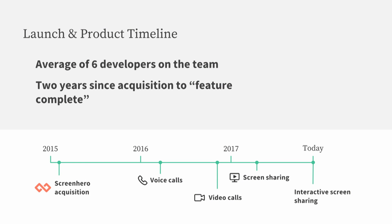I want to talk about the timeline of the project to give you an idea of the resources it would take to build something like this, both in time and people. Our story starts with the acquisition of ScreenHero in early 2015. ScreenHero was a small company that did voice calling and multi-user remote collaboration, like remote desktop control. It was a little over a year later that the first offering from Slack launched: group voice calling. One big piece of that was a serious overhaul of the ScreenHero code to better integrate into Slack, and launching mobile calling functionality into the mobile apps, which ScreenHero didn't have at all.